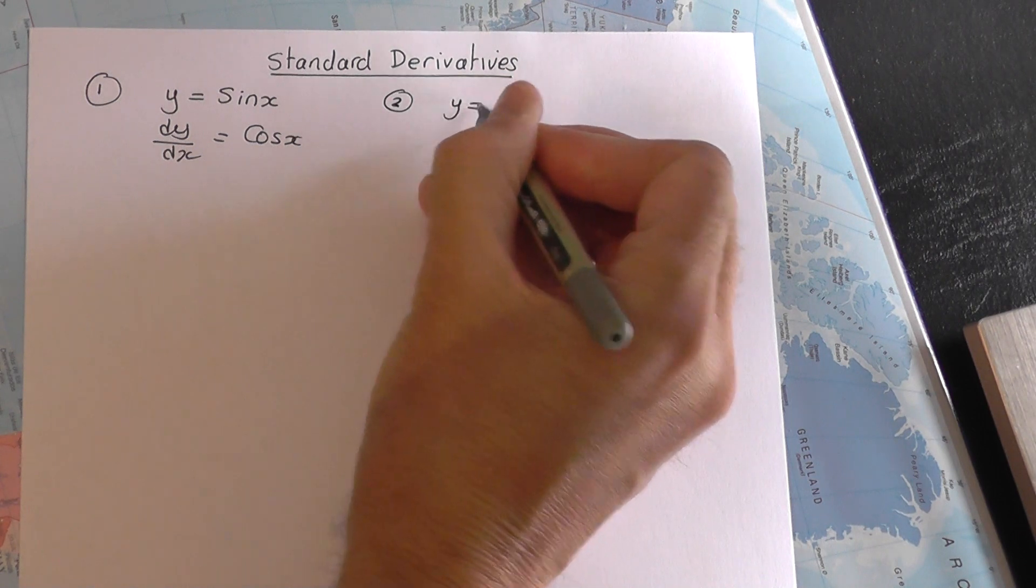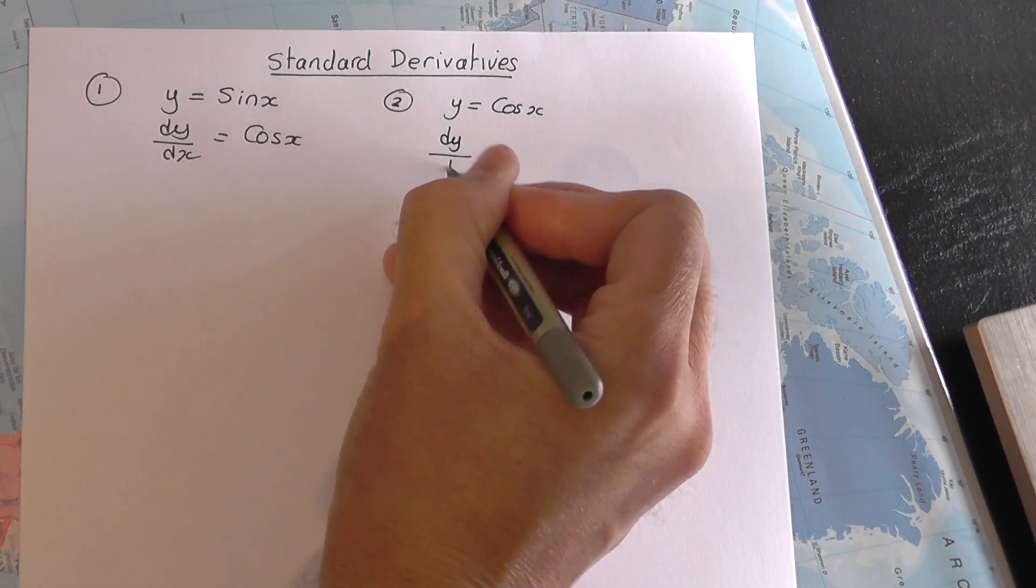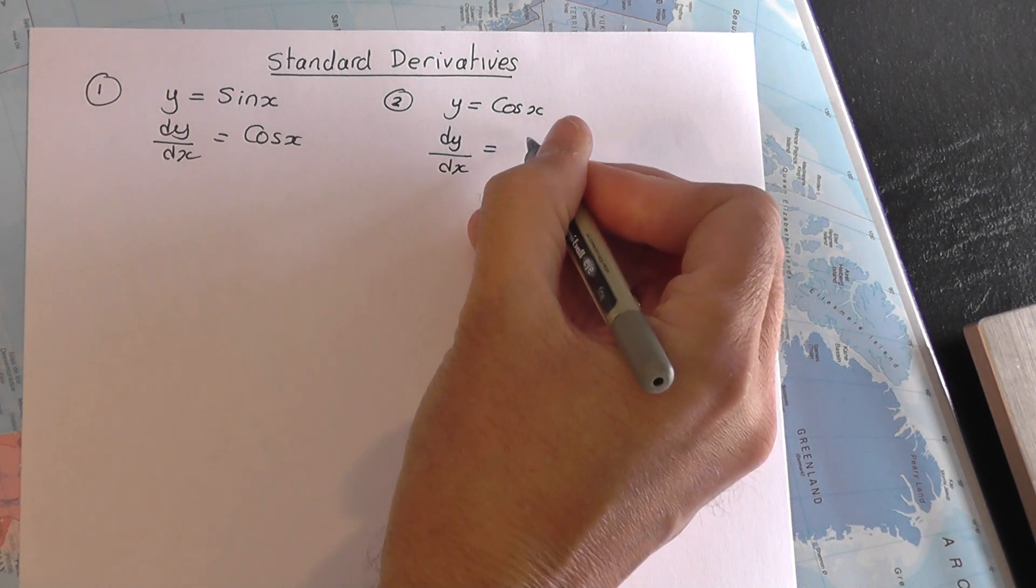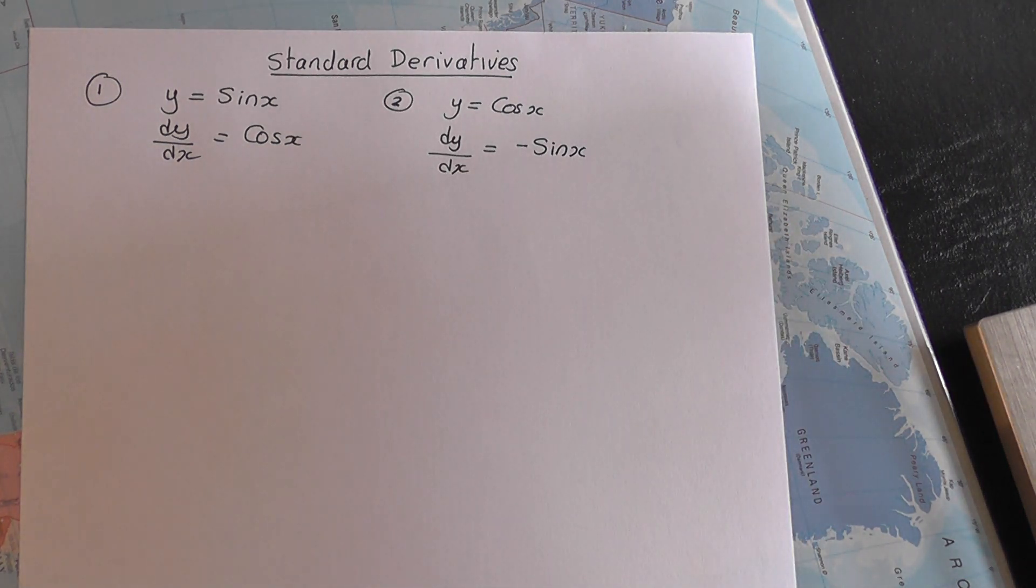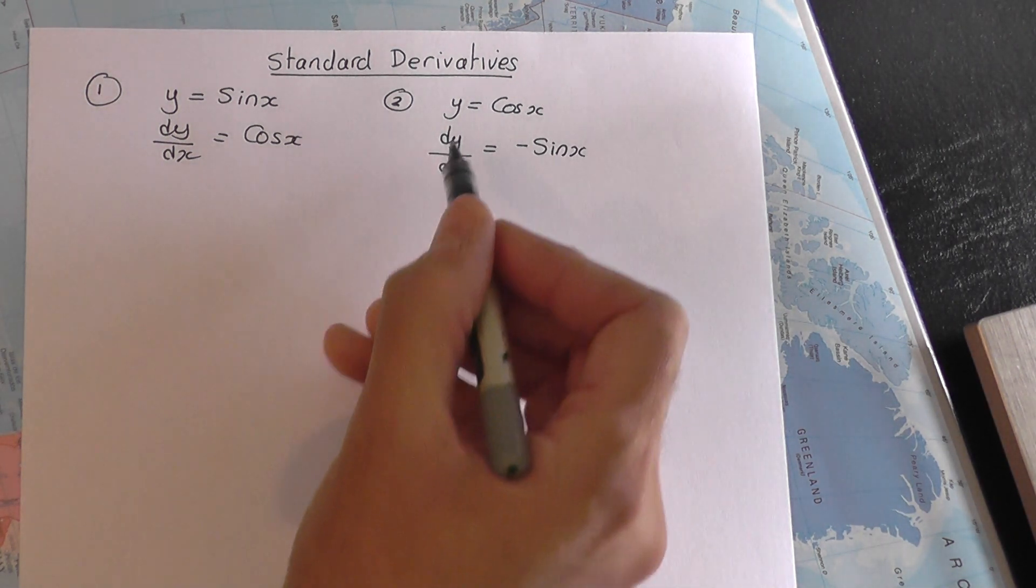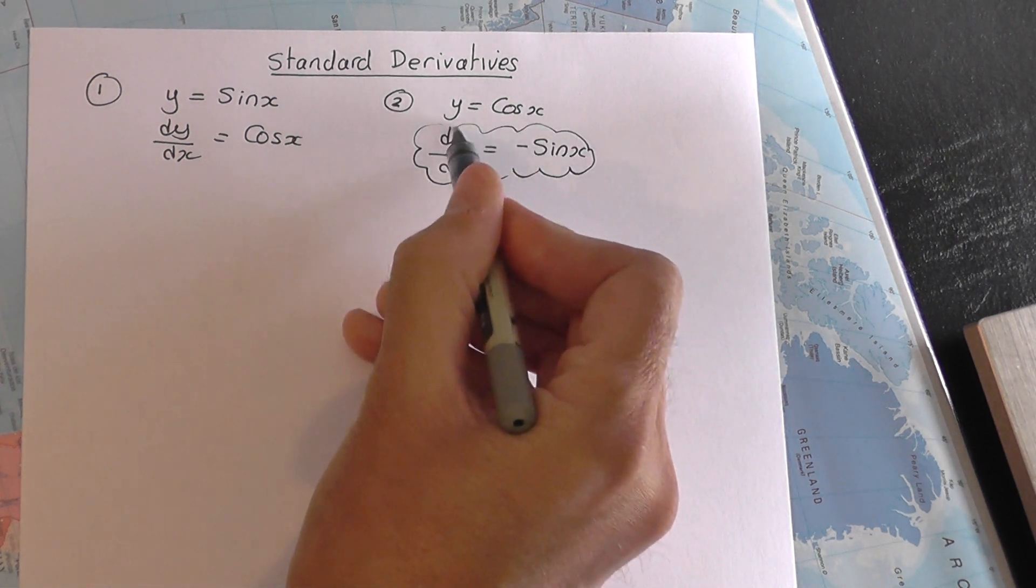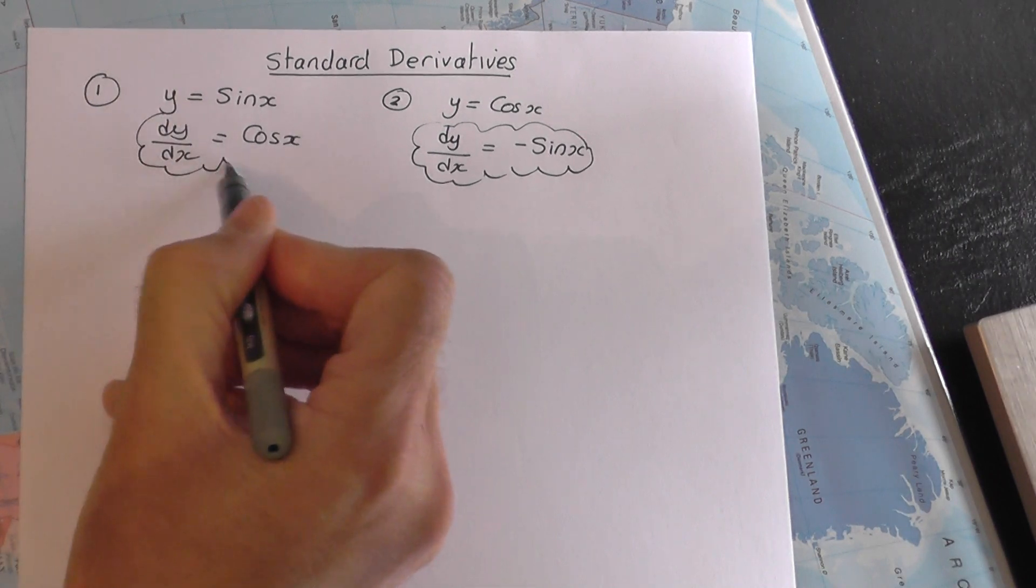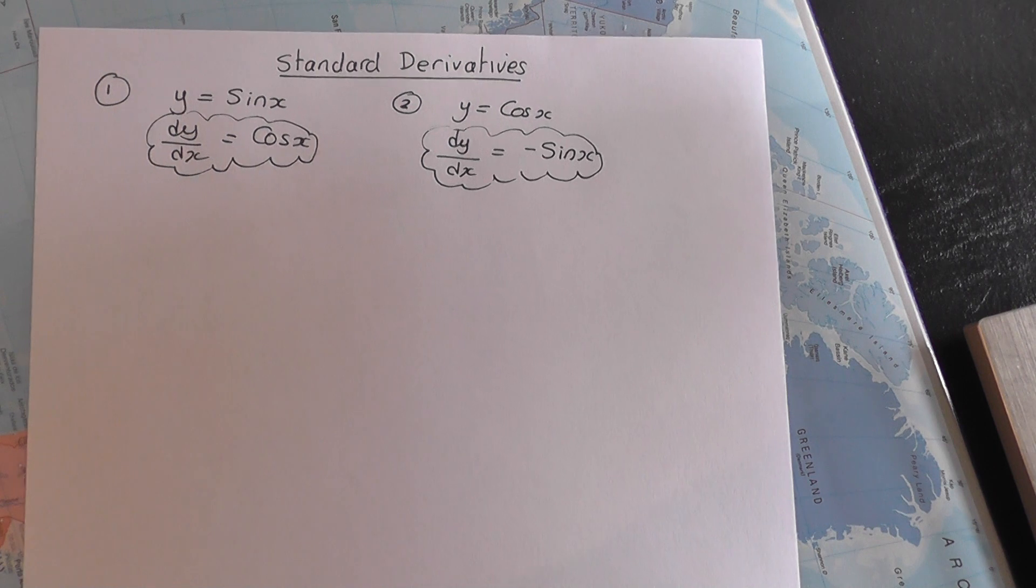The second one is y equals cos x. Learn this off by heart: dy by dx is equal to negative sine x. That can be proven by first principles, and for year 13 you need to be able to do that proof. But that's for another video, another time. So dy by dx is minus sin x if y is cos x. And for y equals sin x, dy by dx is just positive cos x.